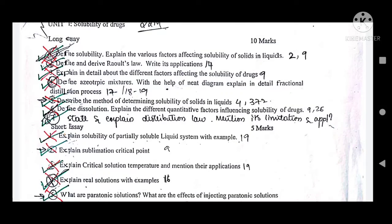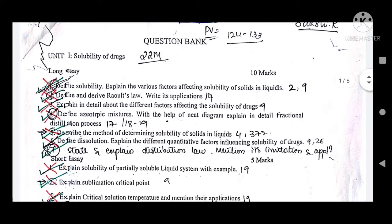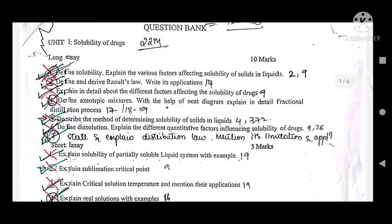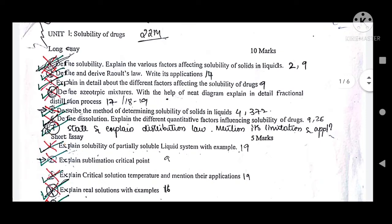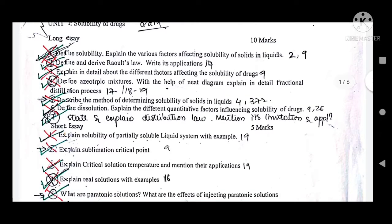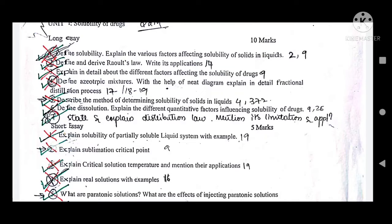The fourth question is: define azeotropic mixtures and, with the help of a neat labelled diagram, explain the fractional distillation process. This is also very important. The fifth question is: describe the method of determining solubility of solids in liquids — explain which methods are used.